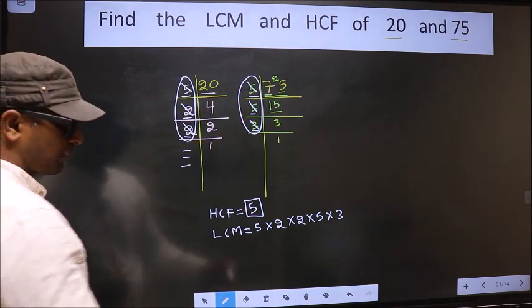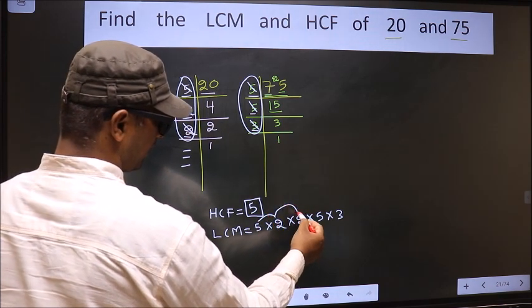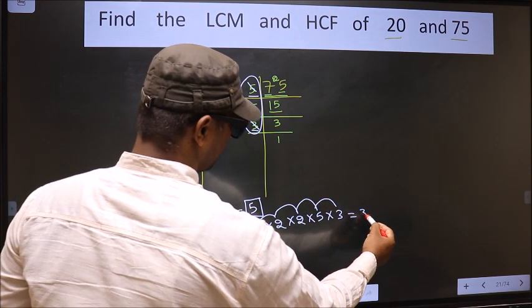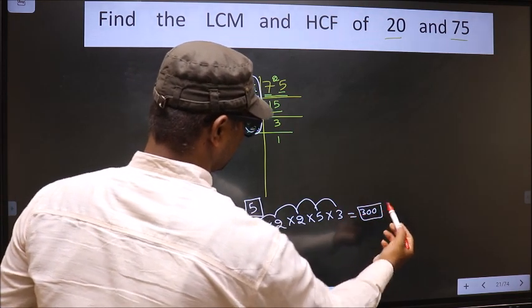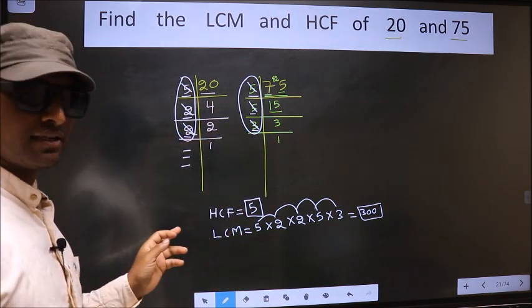So our LCM is 5 times 2 equals 10, times 2 equals 20, times 5 equals 100, times 3 equals 300. 300 is our LCM. Am I clear?